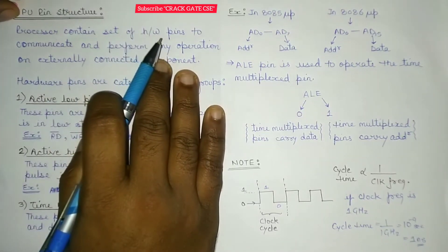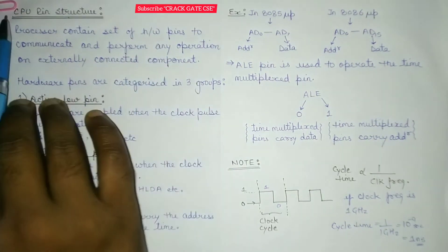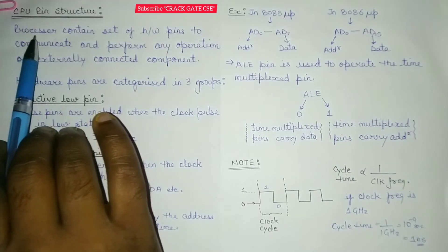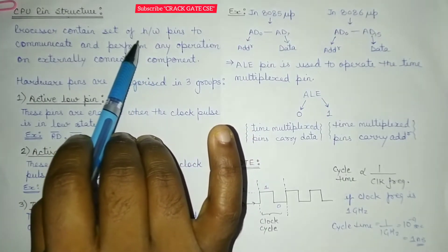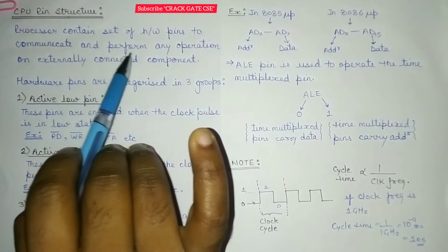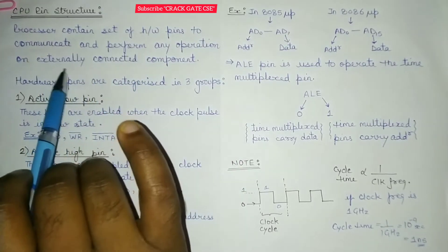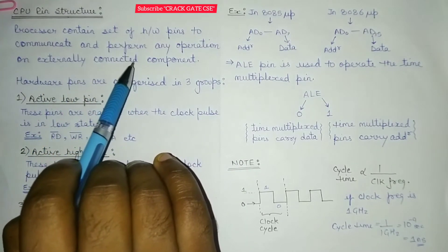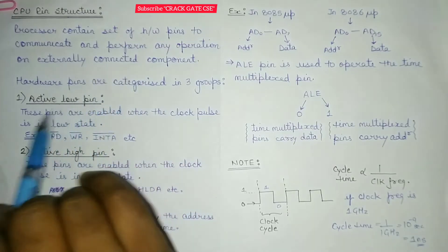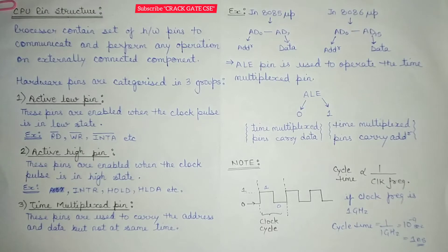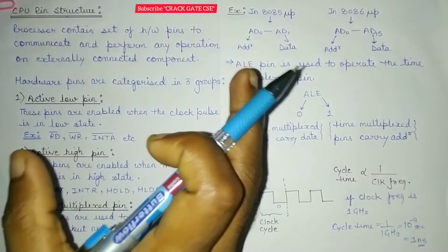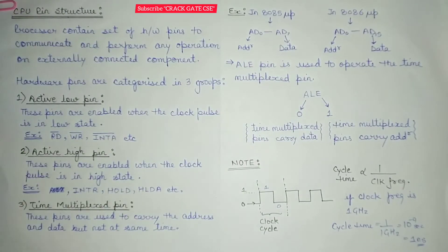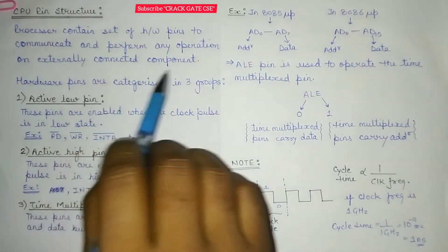Now without wasting time, let's start with the CPU pin structure. So what is the CPU? CPU is nothing but a processor, and we know that the processor contains some set of hardware pins. These hardware pins are required to communicate and to perform any operation on some externally connected components, because in a system there are multiple components connected to each other using hardware pins. Similarly, we have pins in the processor using which different components are connected to the CPU, so that the CPU can communicate or perform any desired operation on those externally connected components.